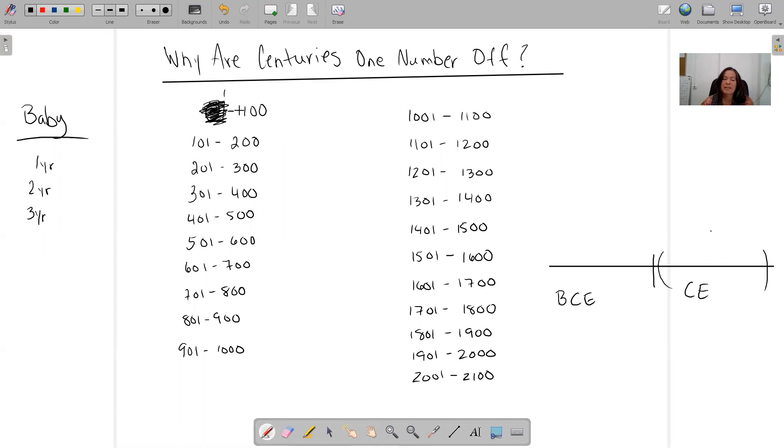One through 100 is considered the first century. So 100 through 200 is the second century, which means 200 through 300 is the third century, 300 through 400 is the fourth, 400 through 500 is the fifth,